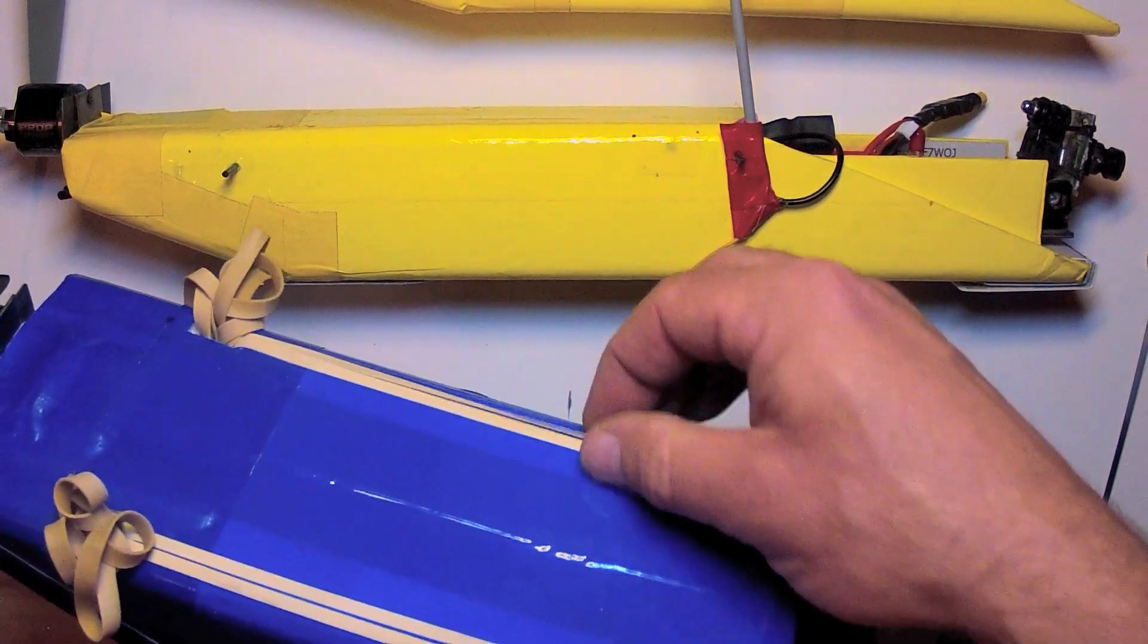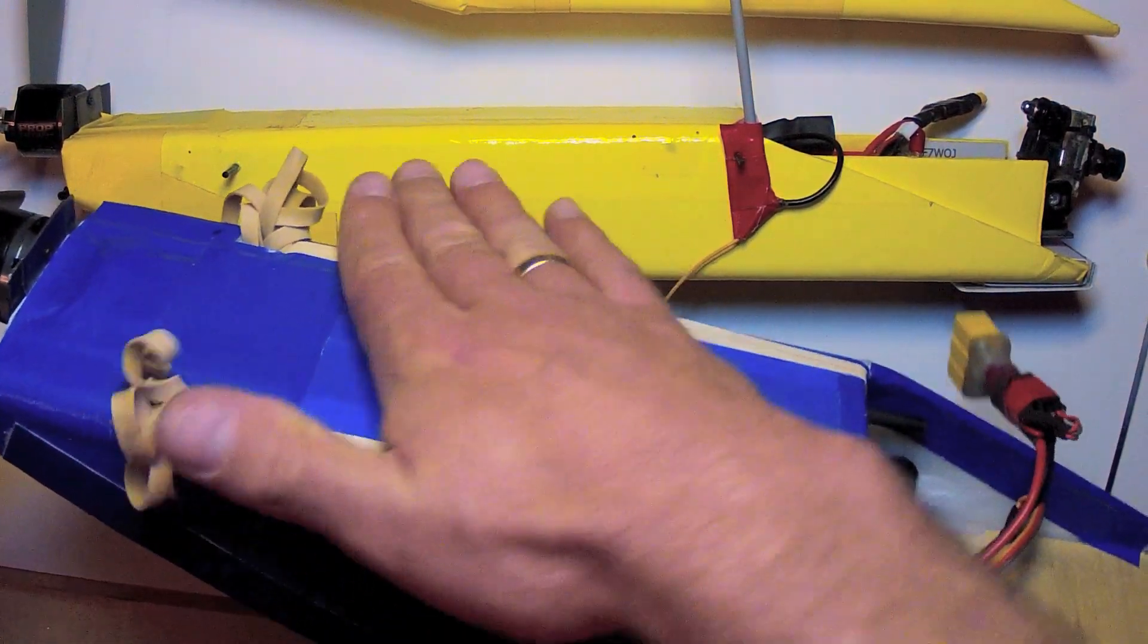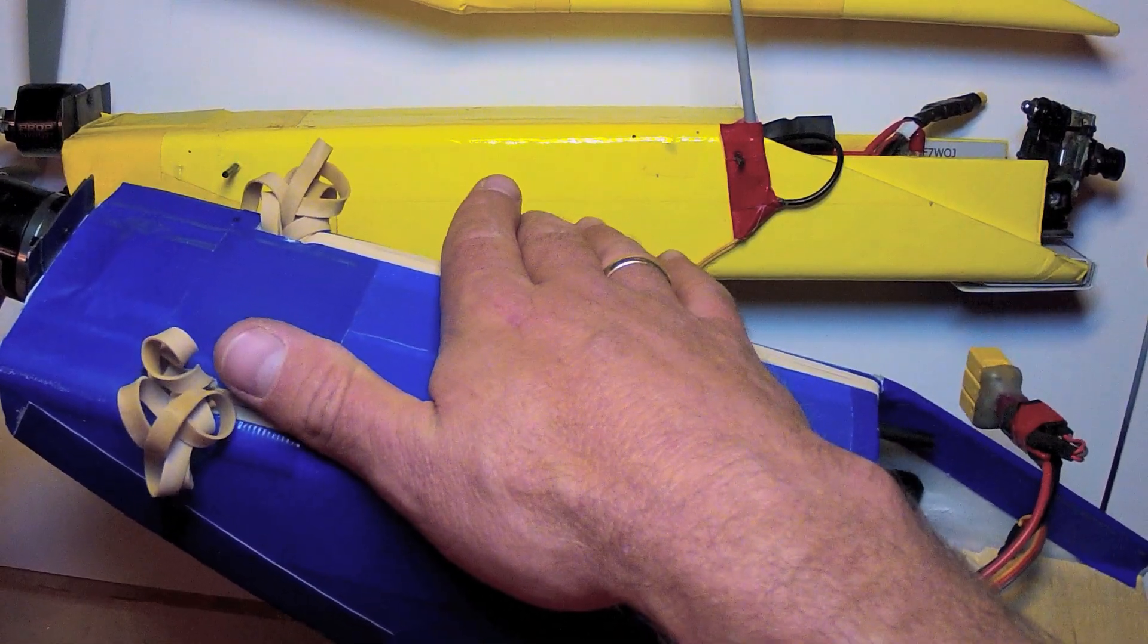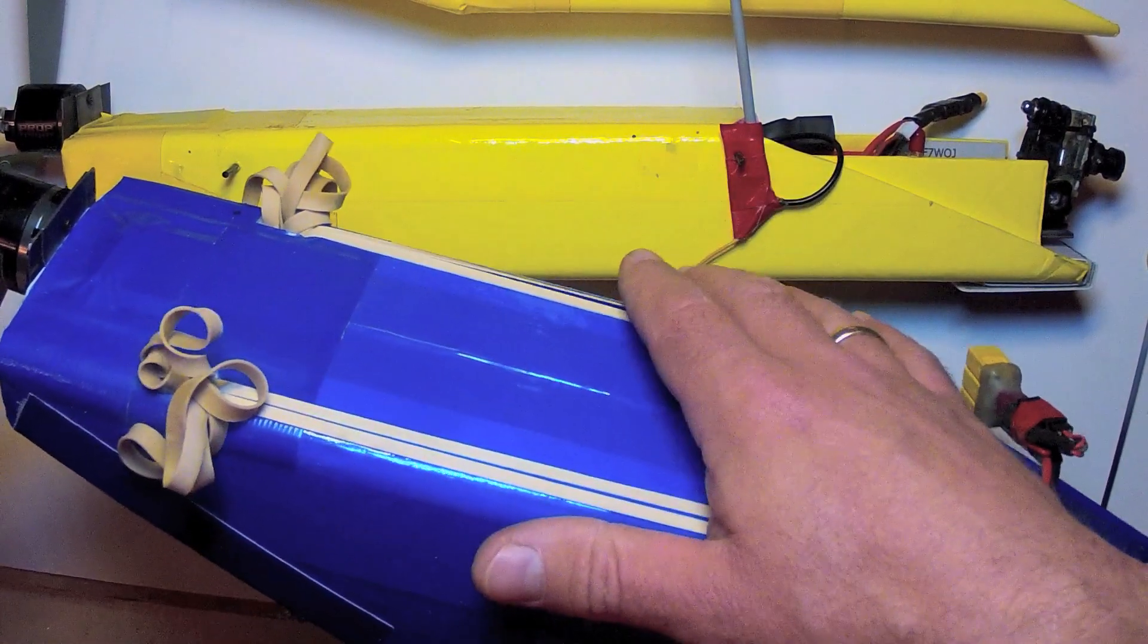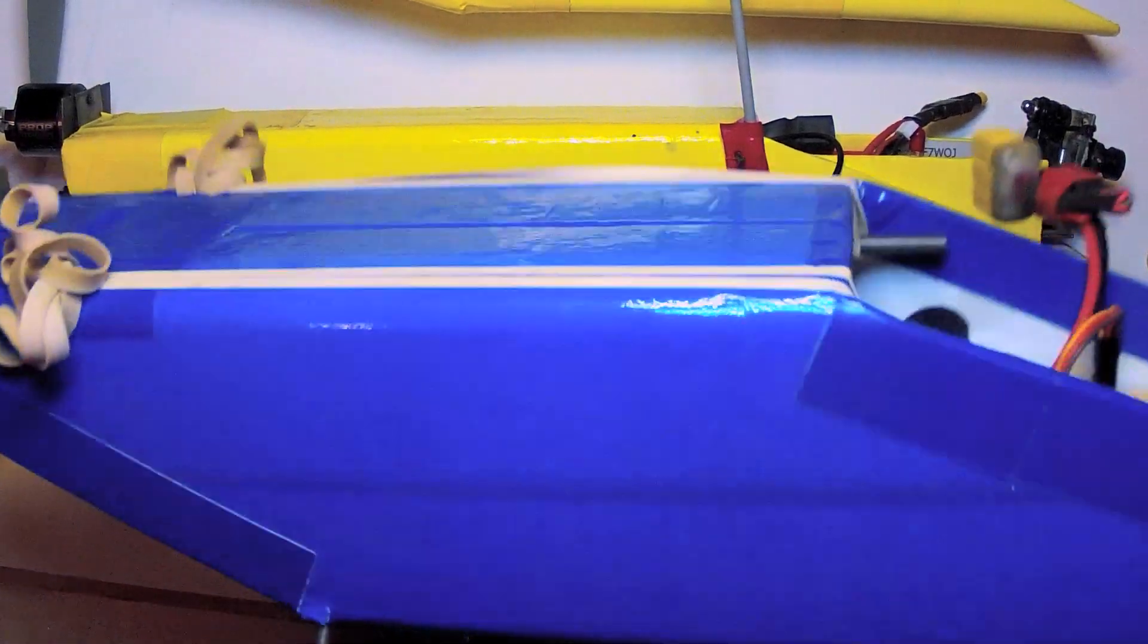I place these over the top so when the wing sits against the top of the fuselage it has friction so it tends not to shift around. But with the rubber bands if you have a rough landing or crash it will permit the wing to move relative to the fuselage, minimizing damage.